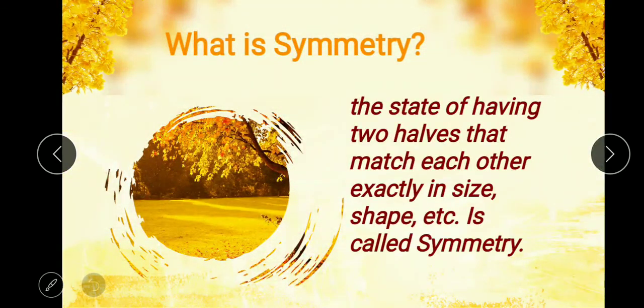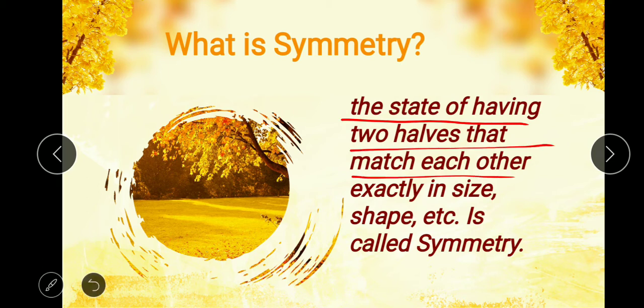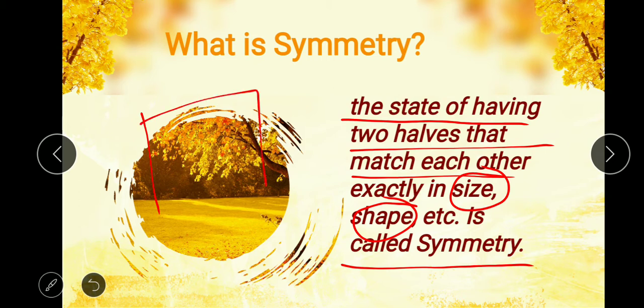The state of having two halves that match each other exactly in size, shape, etc. is called symmetry. The meaning of this line is, if we are having any shape, and if we are dividing the shape into two equal parts, then the shape will be known as symmetrical shape only if one of its parts is exactly equal to the another part.